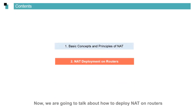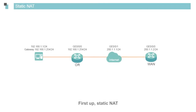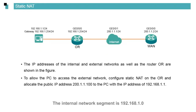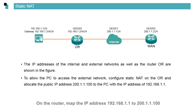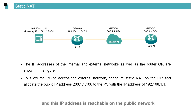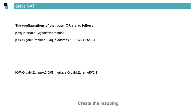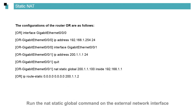Now let's look at how to deploy NAT on routers. For static NAT, the internal network segment is 192.168.1.0 and the external network segment is 200.1.1.0. On the router, map IP address 192.168.1.1 to 200.1.1.100. This public IP address is obtained from the carrier and is reachable on the public network. The key commands are marked in red. Run the NAT static global command on the external network interface to map the public and private IP addresses.